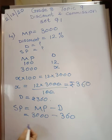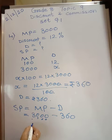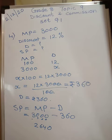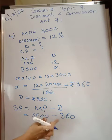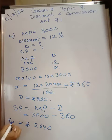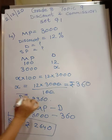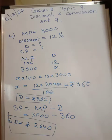Subtract 360 from 3000 — you get rupees 2640. So discount is rupees 360 and selling price is rupees 2640. This is your first answer and this is your second answer.